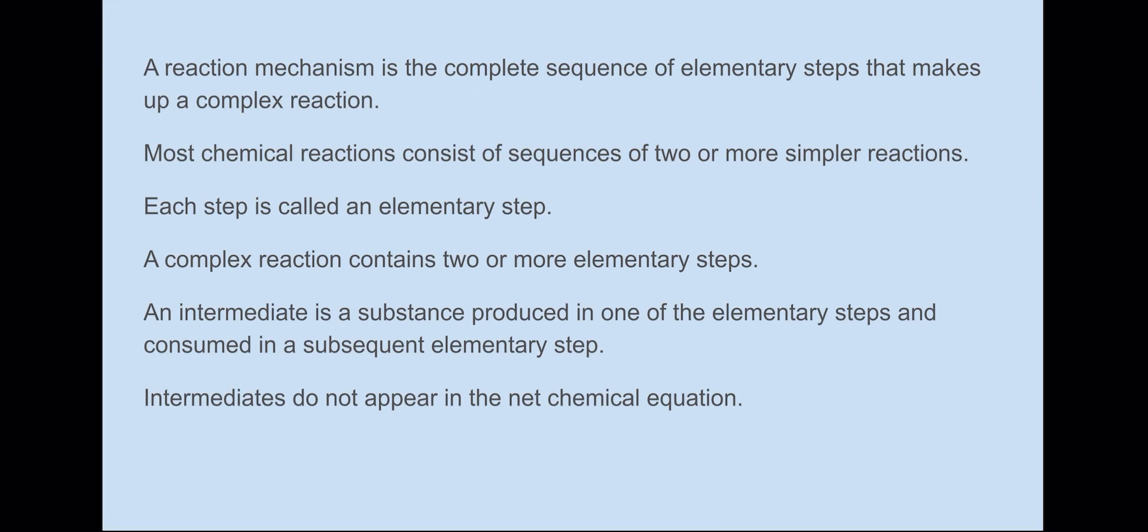Most chemical reactions consist of sequences of two or more simpler reactions, and each step is called an elementary step. A complex reaction contains two or more elementary steps. An intermediate is a substance produced in one of the elementary steps and consumed in a subsequent elementary step. You'll realize that this is the opposite of catalysts, because catalysts are not consumed in the reaction. Intermediates are produced and then consumed, so they are a product and then a reactant, but catalysts are reactant then products. Intermediates do not appear in the final or net chemical equation.